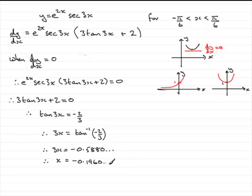Well, this is the x part of the coordinate. We need to find the y part, the y value. So, what we need to do is just say, when x equals the minus 0.1960 and so on, what we need to do is substitute this into our equation up here to get what y is. So, therefore, y would equal e^(2 × -0.1960...) multiplied by sec of 3 times this value.